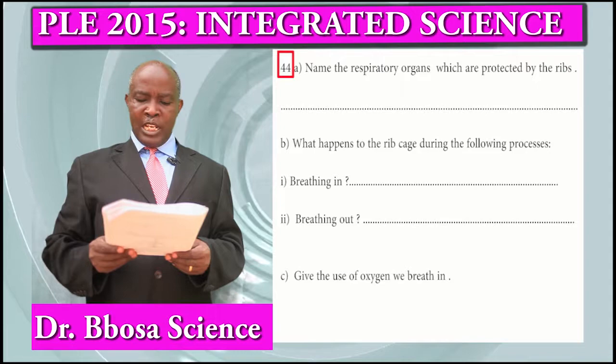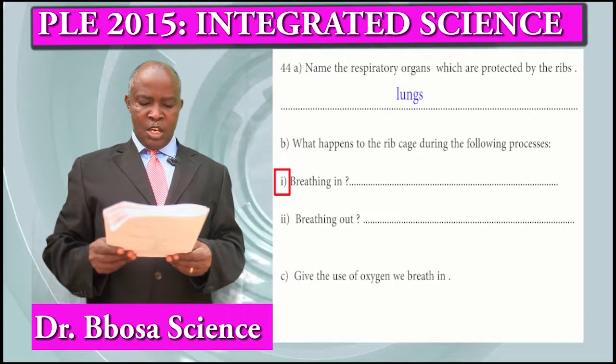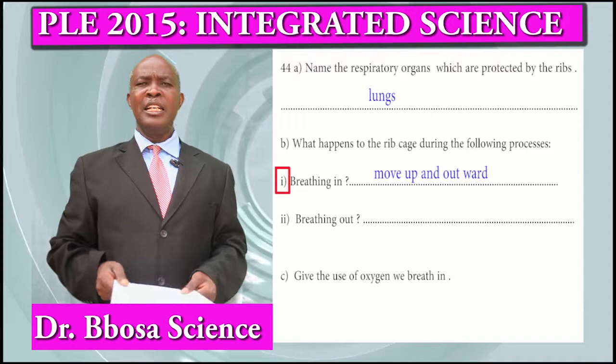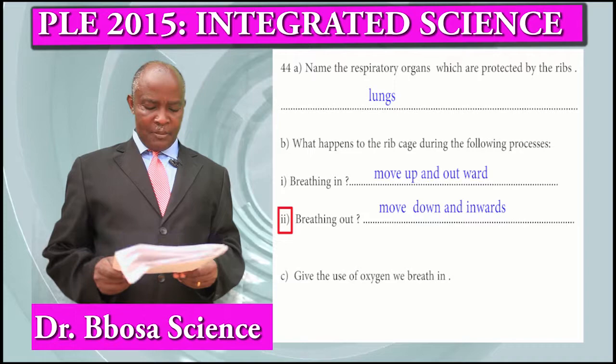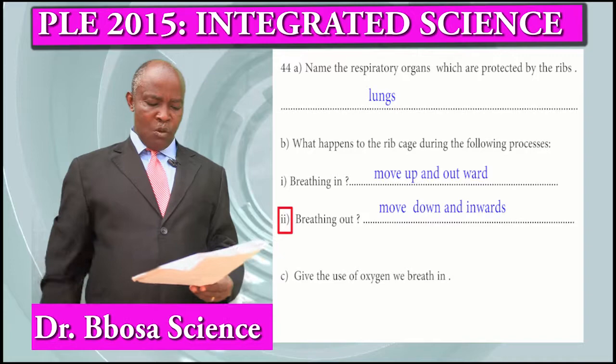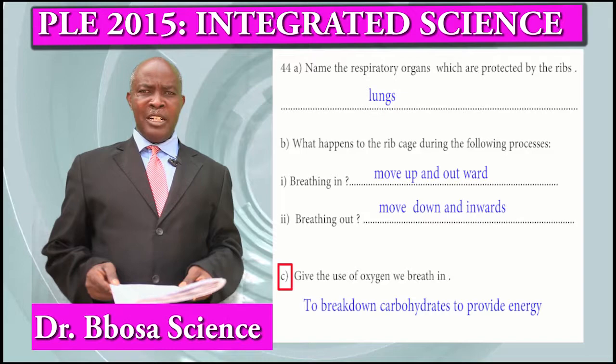Question 44a: Name the respiratory organs which are protected by the rib cage. That is the lungs. Part B: What happens to the rib cage during breathing in? They move up and outwards. Breathing out: they move downwards and inwards. Part C: Give the use of oxygen during breathing. Oxygen is used to break down food to provide energy.